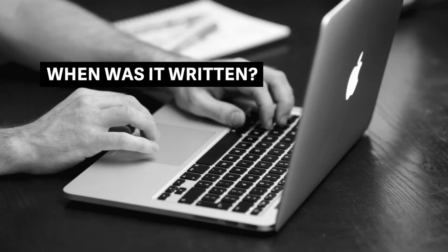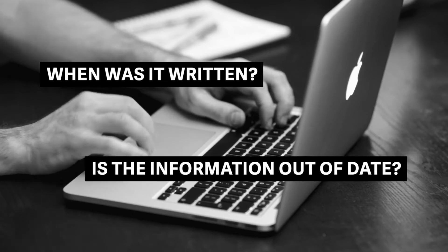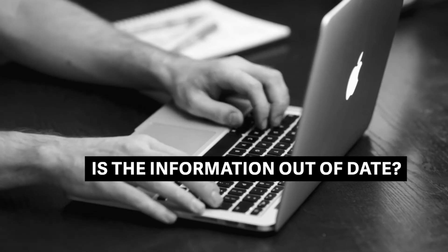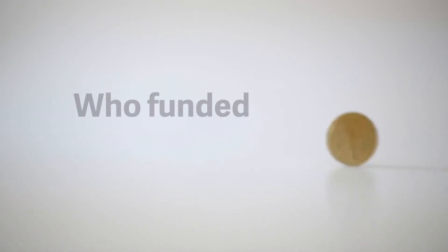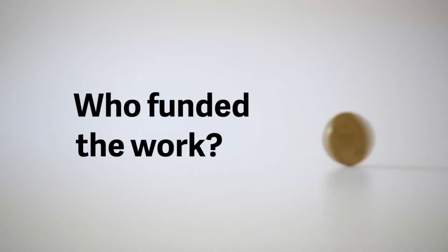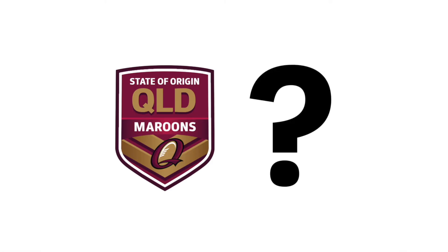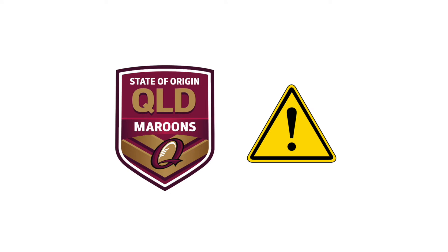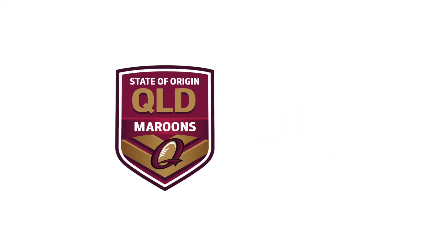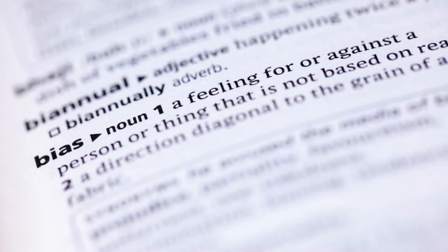When was it written? Think about how old this work is. Is the information out of date? Who funded the work? Again, if we think of our conclusion that the Queensland Maroons are the most successful team in the State of Origin series, we might need to be cautious of information that supports this which has been funded by the Queensland Rugby League. Organisations can fund research which supports their own interests, but this may be biased information.